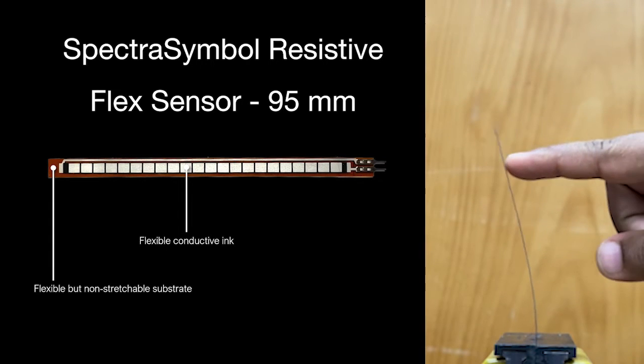We chose to use a resistive flex sensor from Spectra Symbol for its compactness and sensitivity. However, the sensor has limited resolution, providing only one measurement per sensor for over a length of 10 cm.